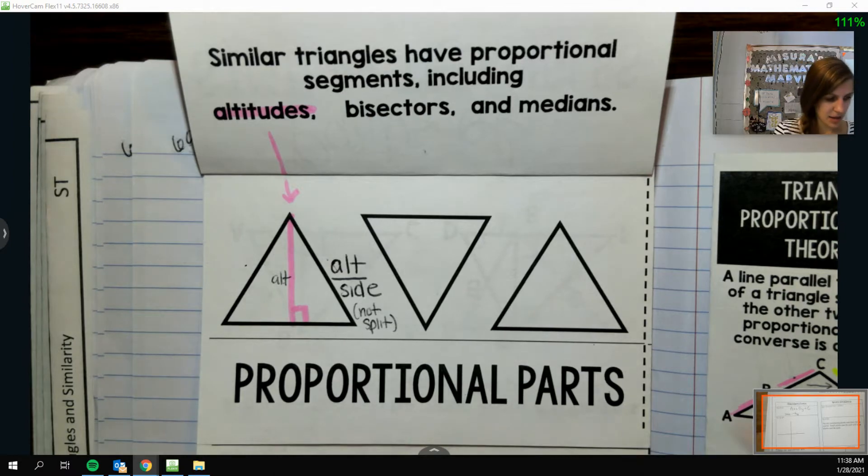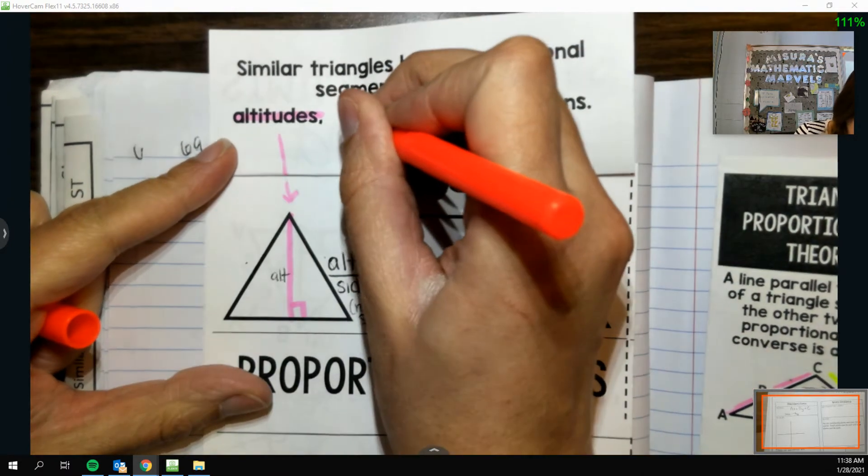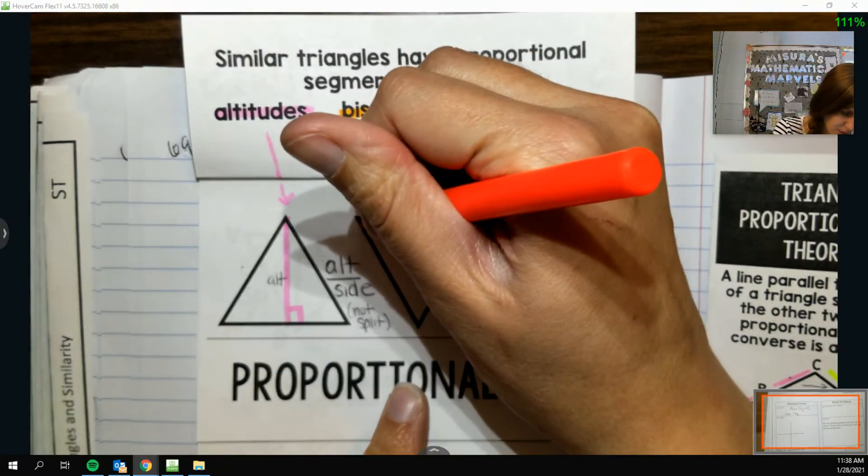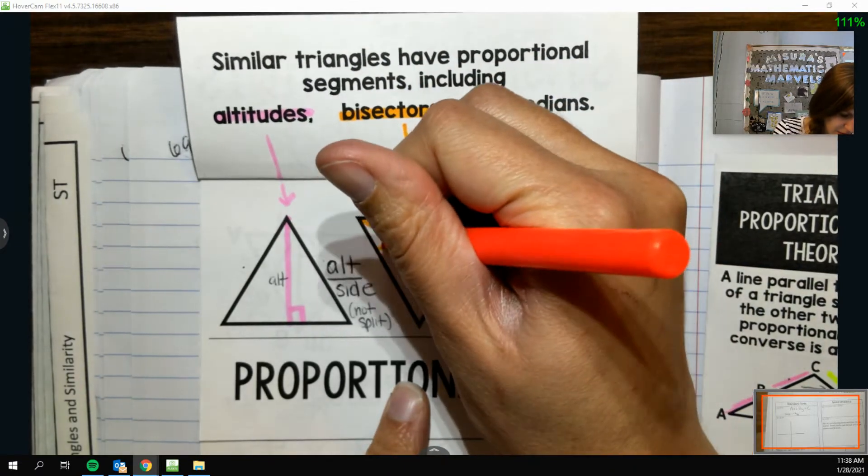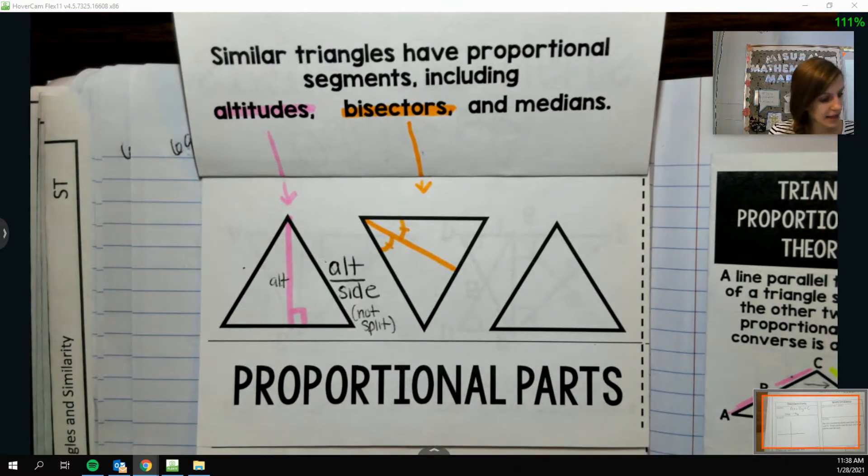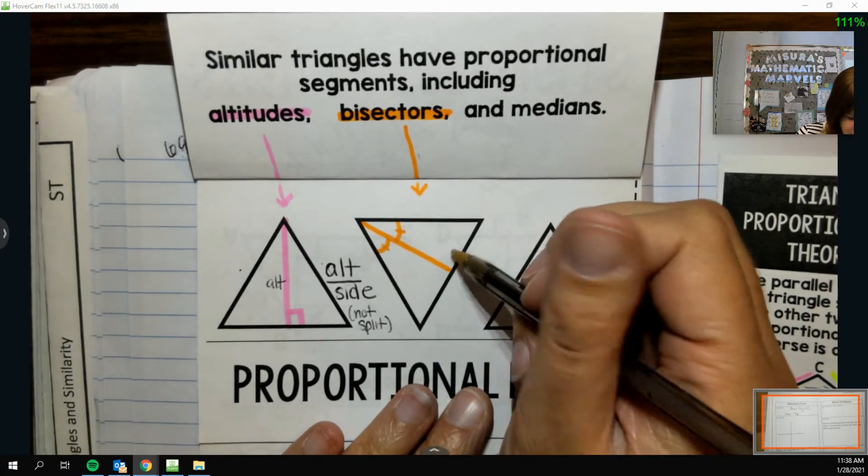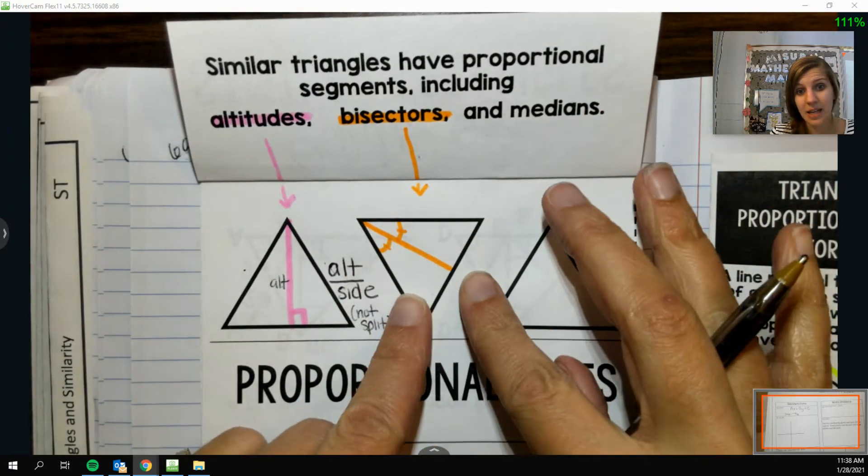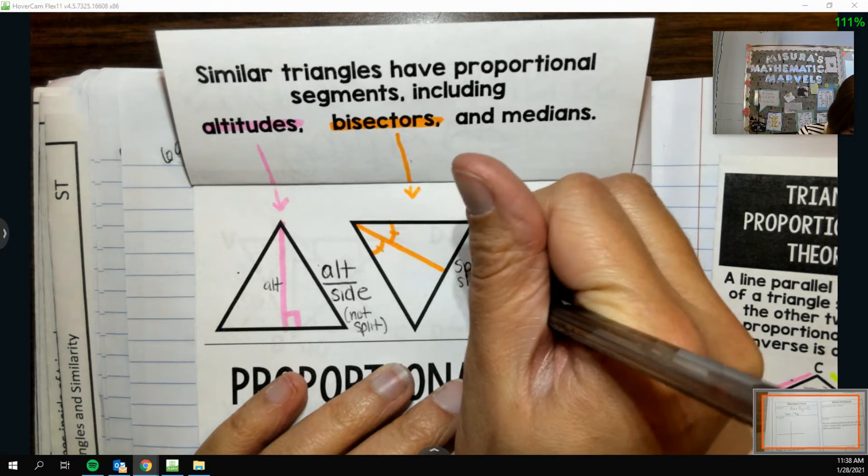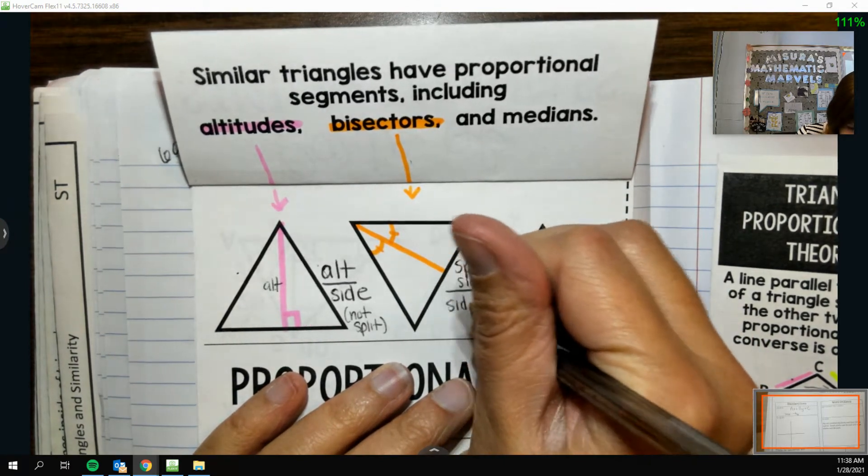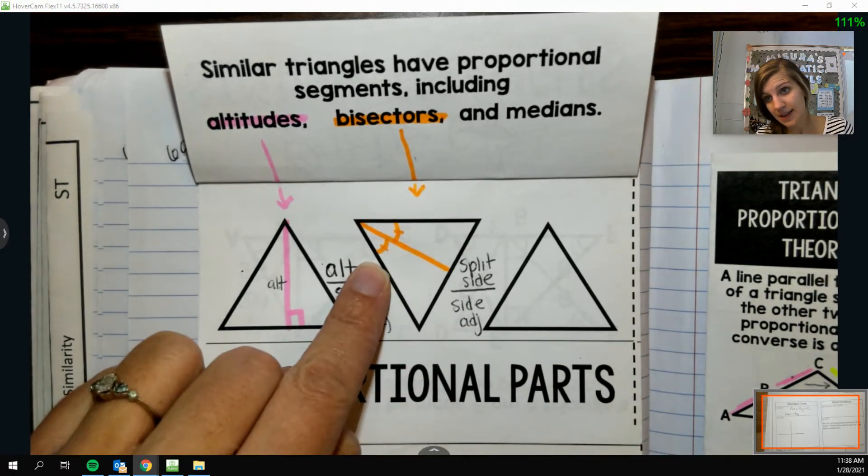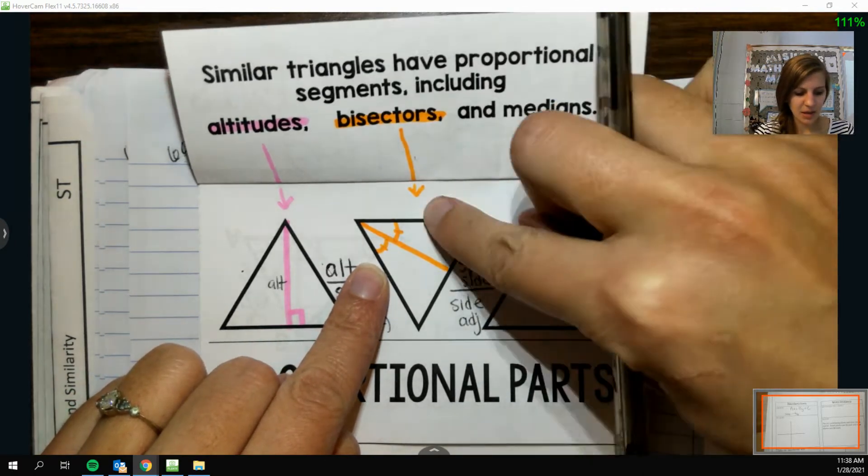We could write a ratio with some bisectors, kind of more so with angle bisectors. So if I have an angle bisector coming out of that angle, a really nice ratio that we can write there is we can do the bisected set. The side that was split, so let's say it that way, split side over the side adjacent. So it's kind of like this side that was split over the side that's adjacent. This side that was split over the side that's adjacent.